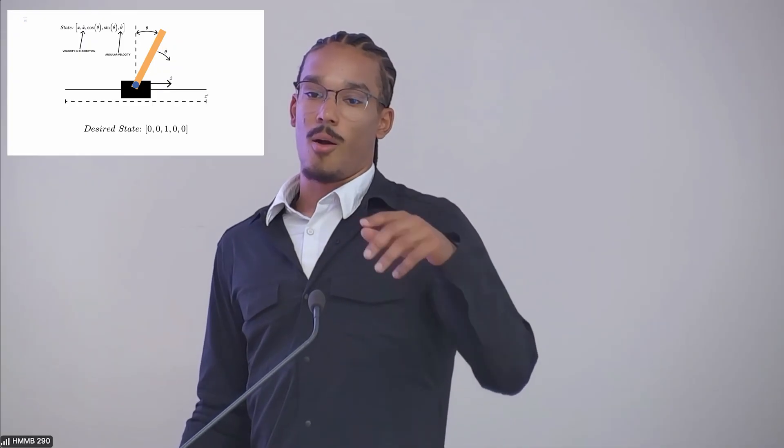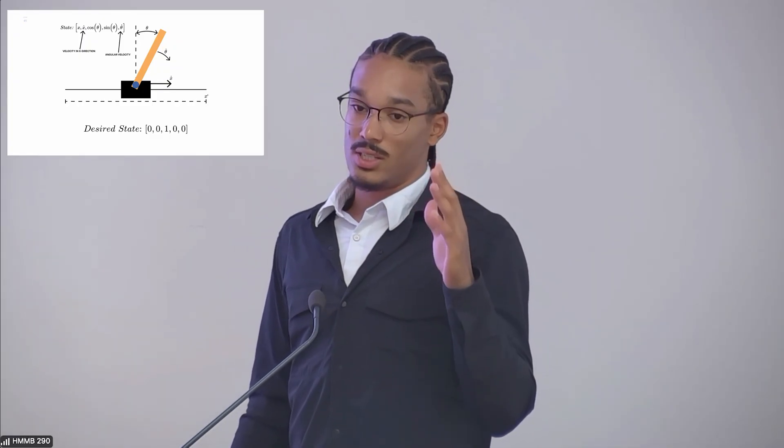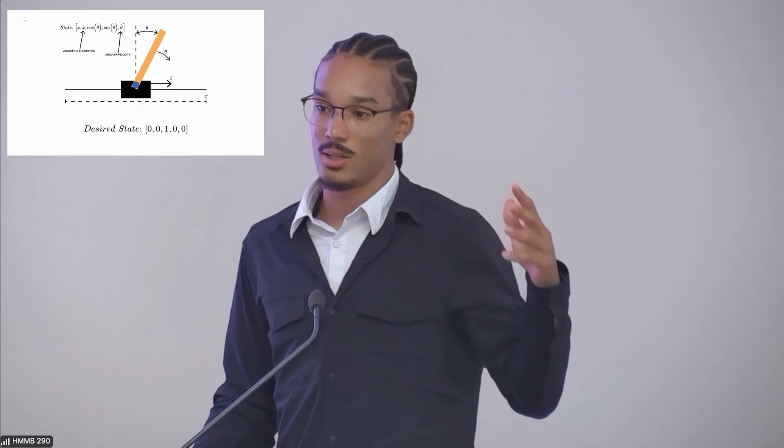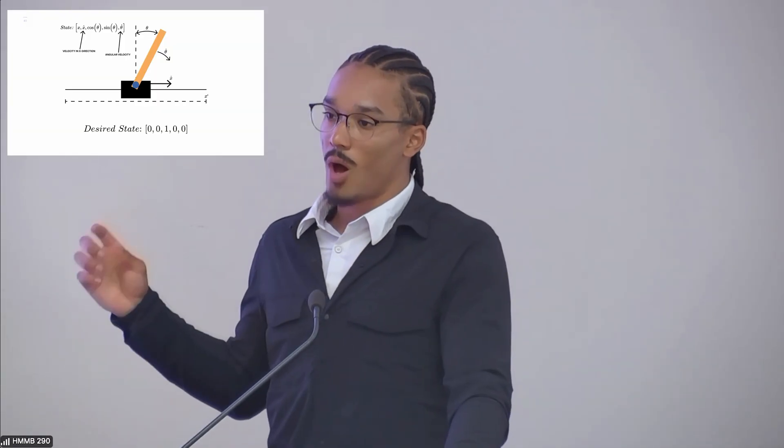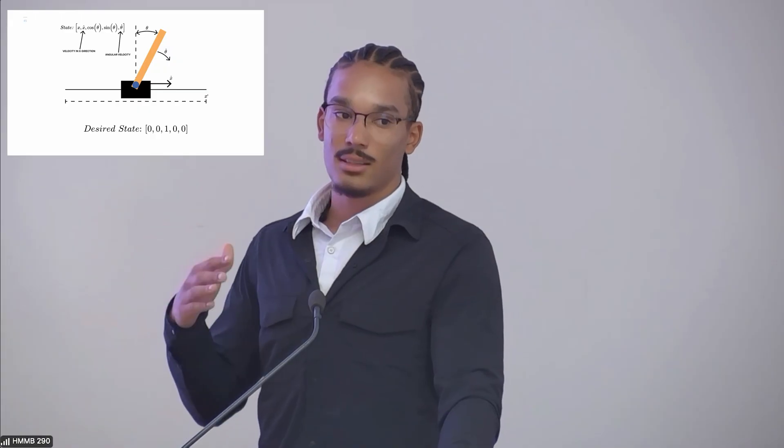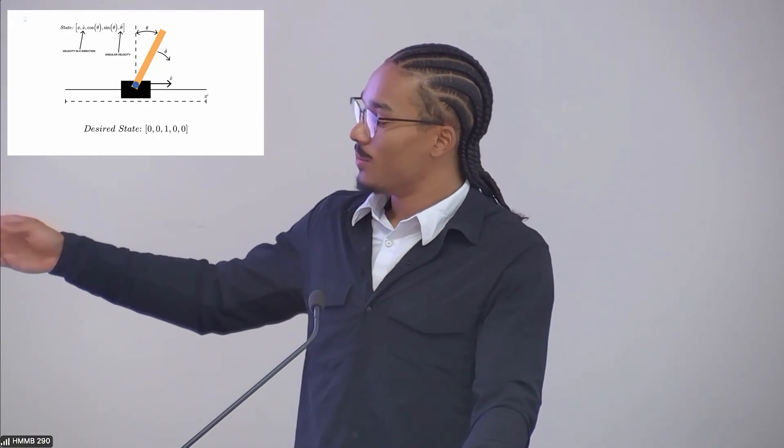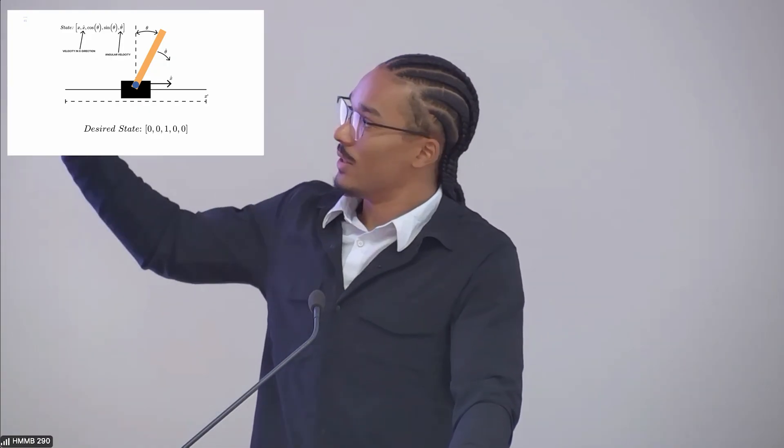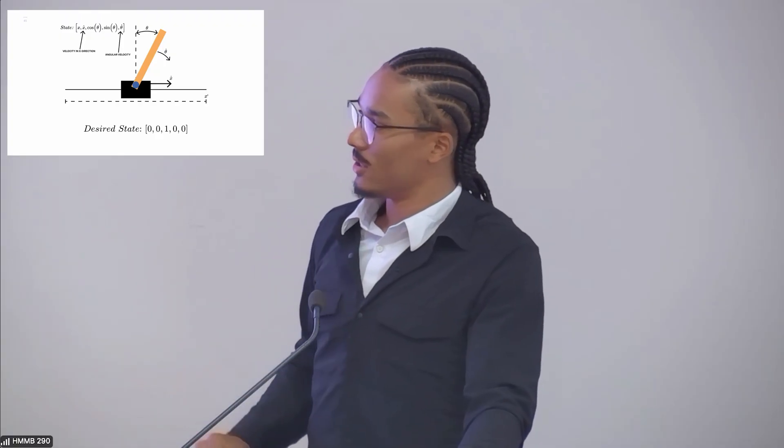And this is because the equilibrium is defined as theta equals zero. Or after like a couple oscillations, it could be theta equals 2π, theta equals 4π, theta equals 6π, and so on. So for the model to understand what the desired state is without having any confusion between different desired states, cosine and sine keep it so that the theta is 1 and 0, or in the state vector, it's 1 and 0 for the desired state, no matter what the angle actually is.